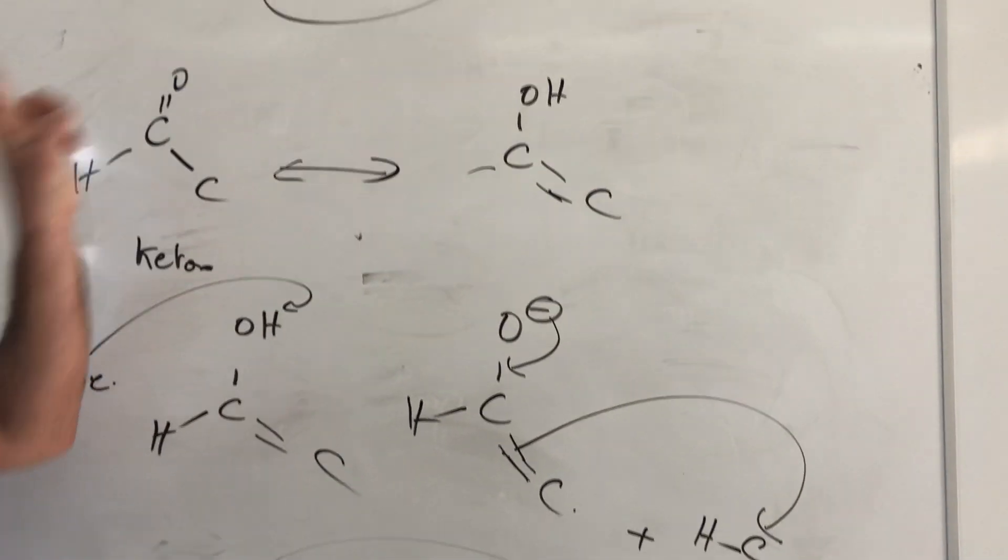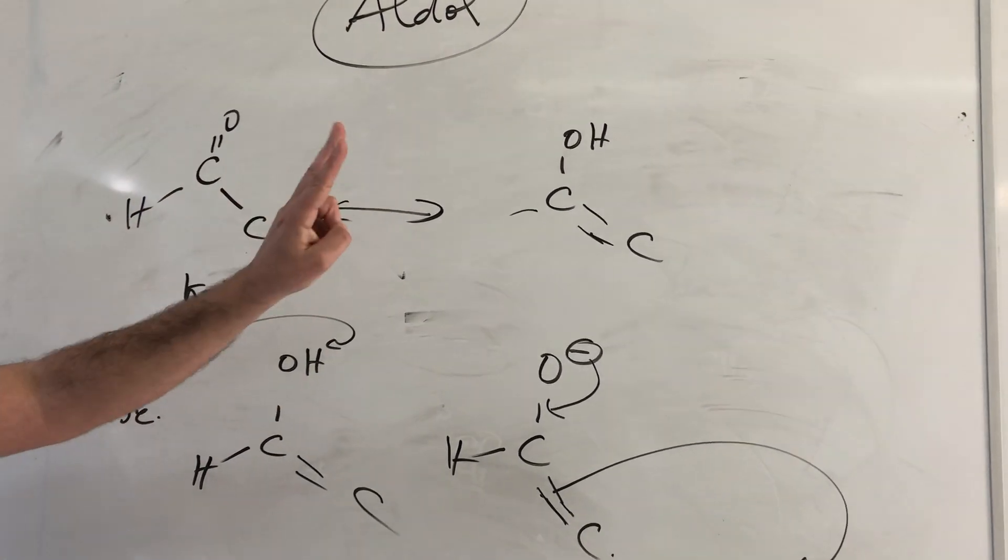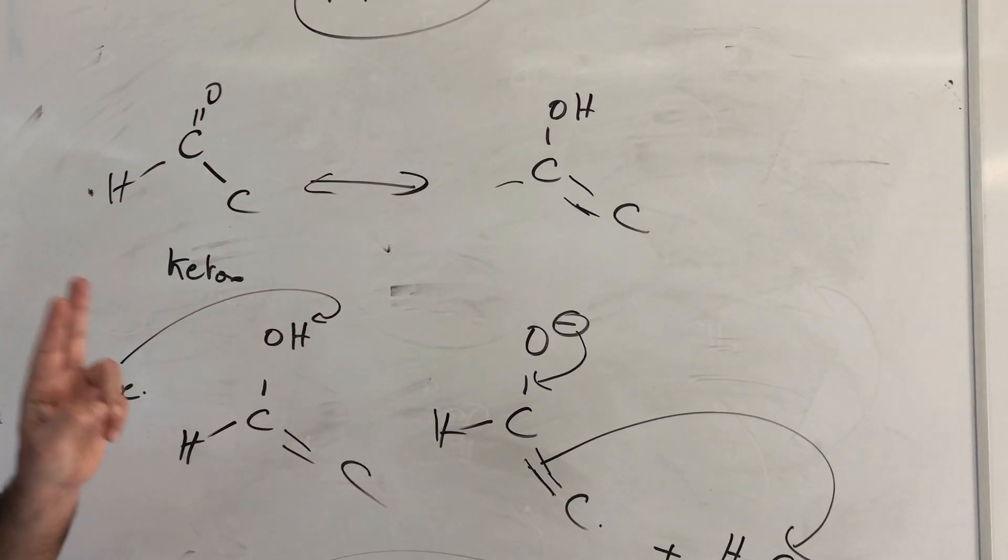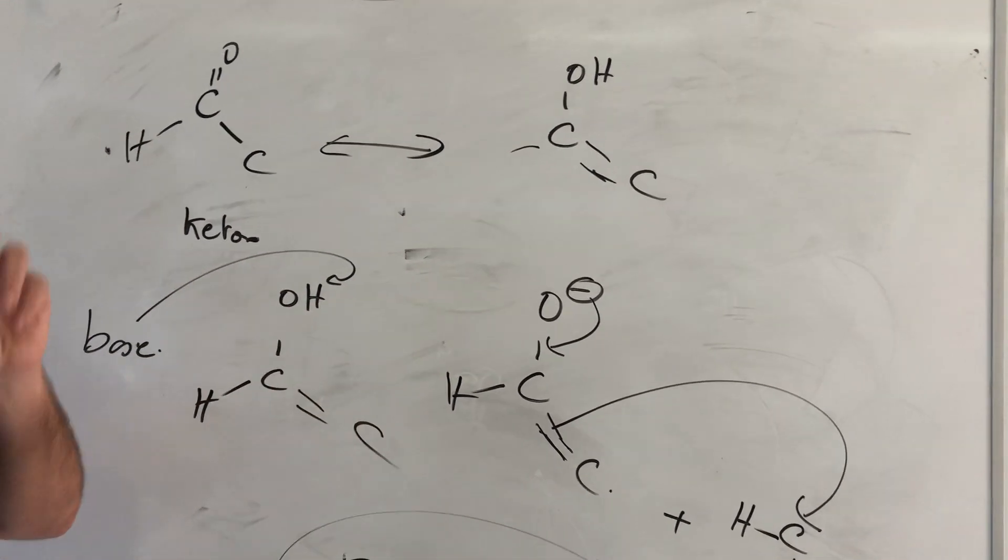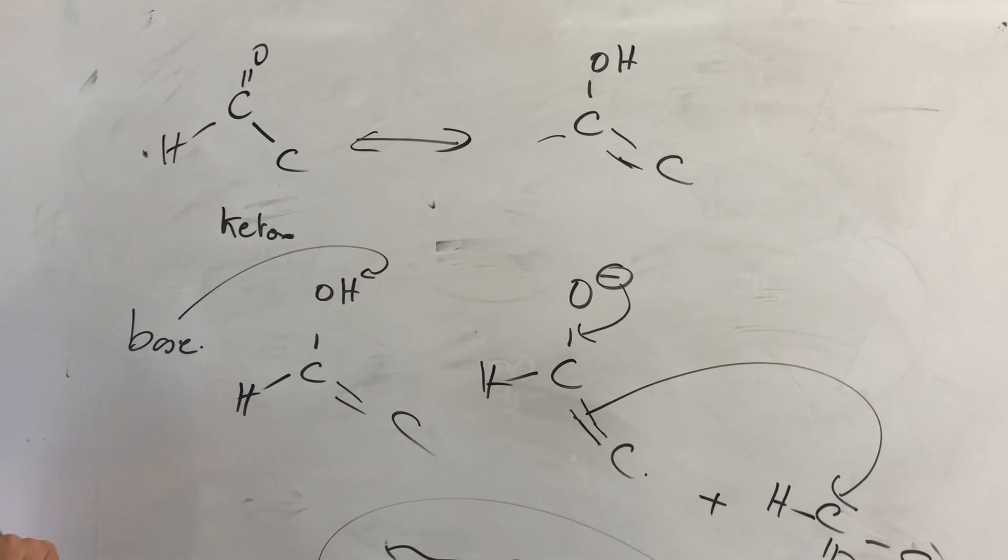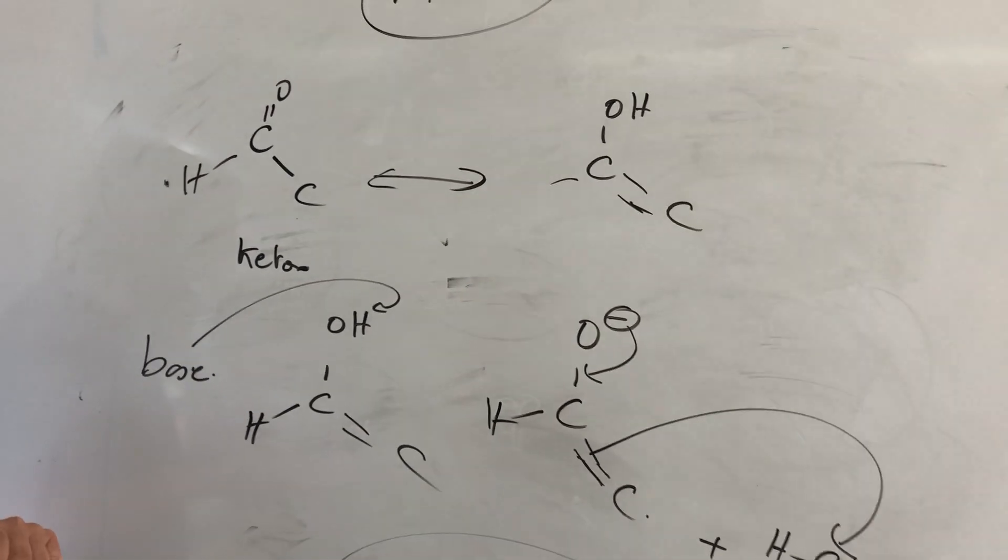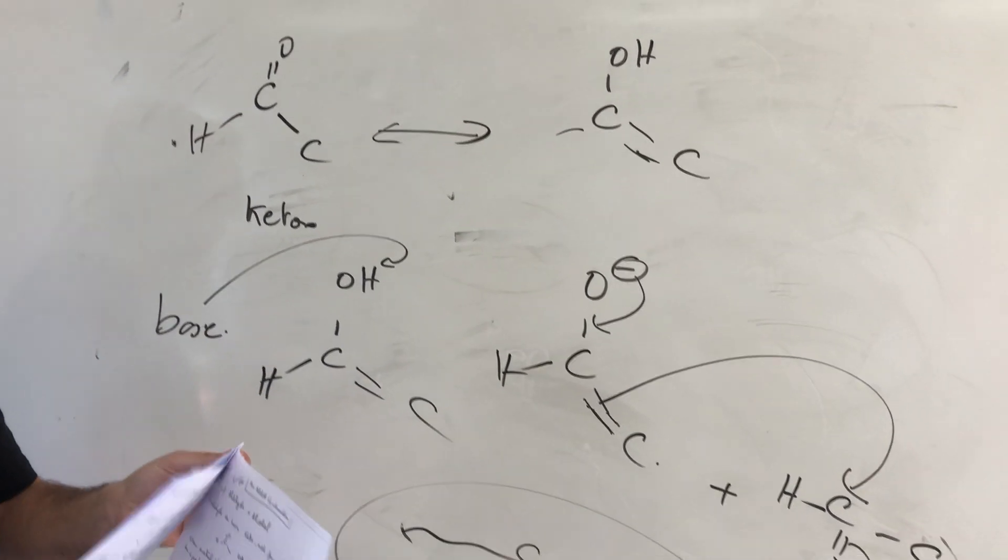So you can read it in your notes. So I repeat, aldol is the condensation of two moles of aldehyde, usually the same aldehyde with H-alpha, so it's the opposite of Cannizzaro, to give an aldol which is a compound containing the function aldehyde and alcohol in the same molecule.